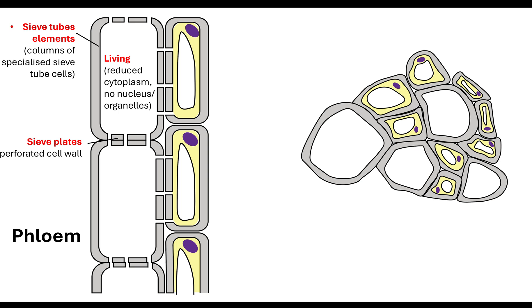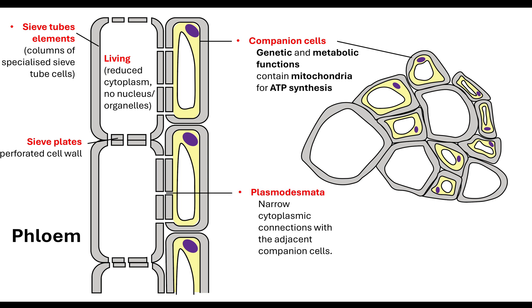The fact that it's living is because it has these companion cells associated with it. All around the phloem vessel you have these companion cells. Those companion cells have got the nucleus, therefore they have the genetic information that is necessary for the metabolic functions. They have the mitochondria necessary for ATP synthesis. Because the phloem has these companion cells which are connected by these plasmodesmata, it means that the phloem vessel is classed as being living.